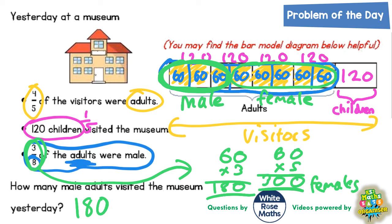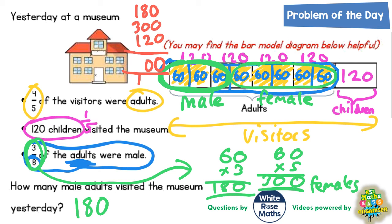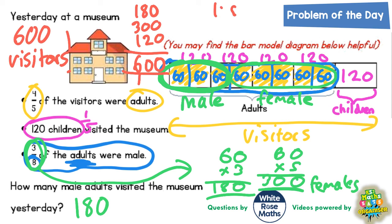You could go even a stage further. If you knew there were 180 male adults, 300 female adults, and 120 children, you could actually work out how many people went to the museum altogether. That would be 600 people altogether. Which also fits in with what we said earlier, because each of the five bits of the bar was worth 120, and 120 times 5 also gets you to 600. Whichever way you look at it, it seems to fit.